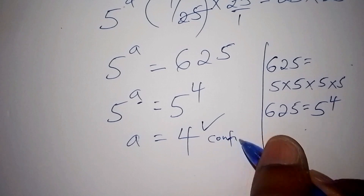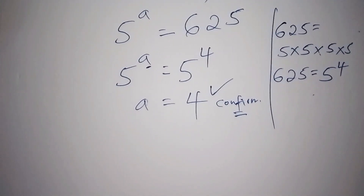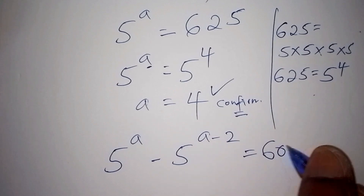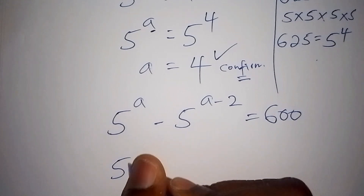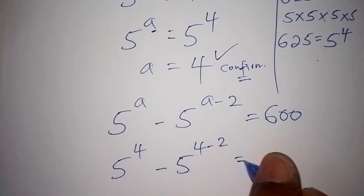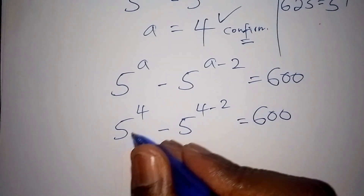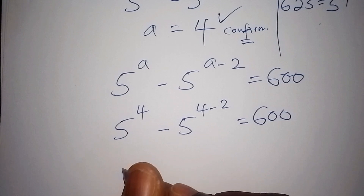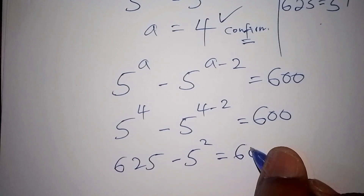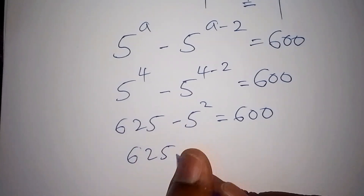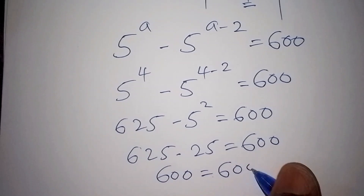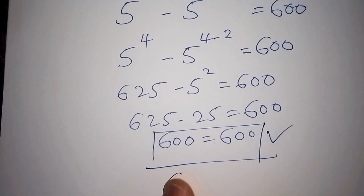Let us confirm and check if that is the correct answer. Our question was 5 to the power of a, minus 5 to the power of a minus 2, equals 600. Substituting a = 4: 5 to the power of 4 minus 5 to the power of 4 minus 2 equals 625 minus 5 to the power of 2, which is 25. So 625 minus 25 equals 600. Our answer is confirmed: the value of a equals 4.